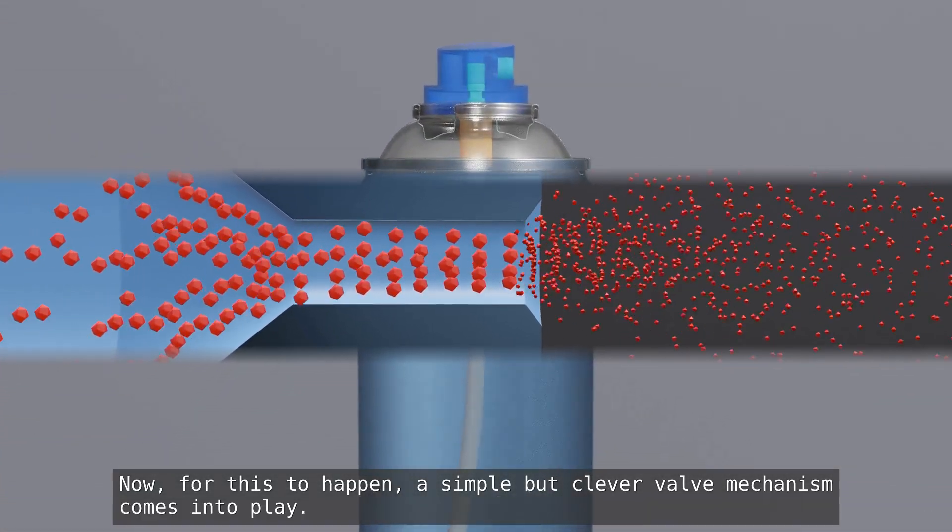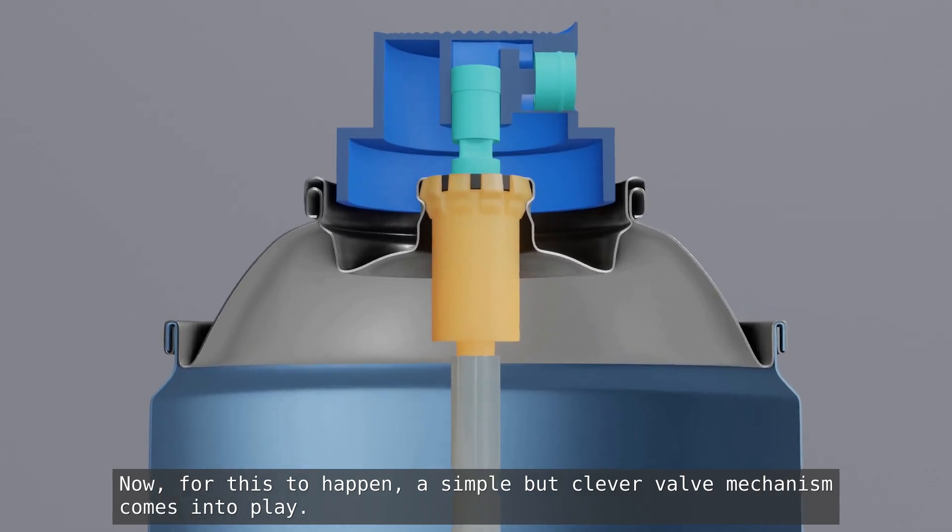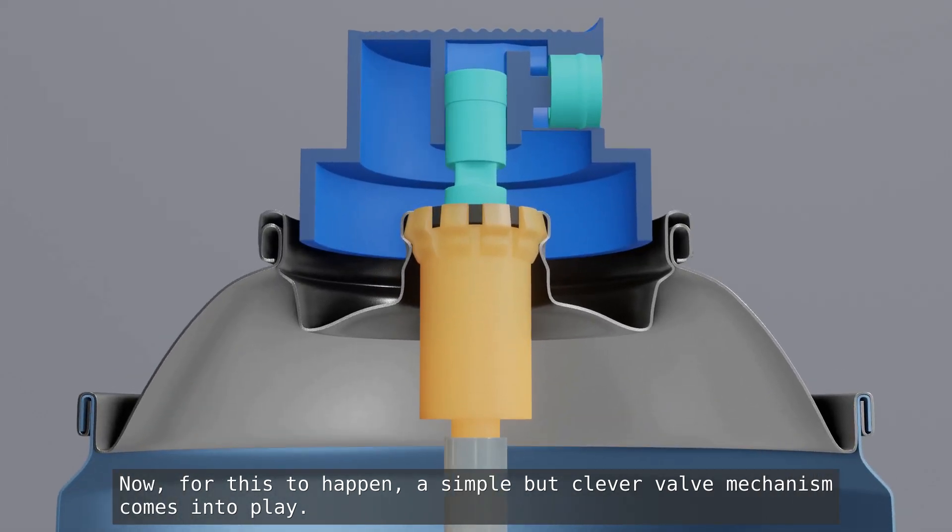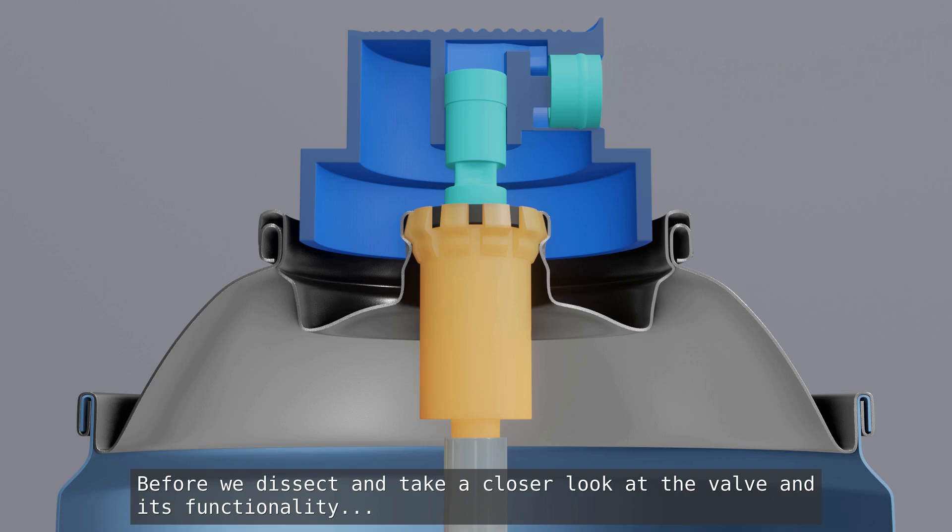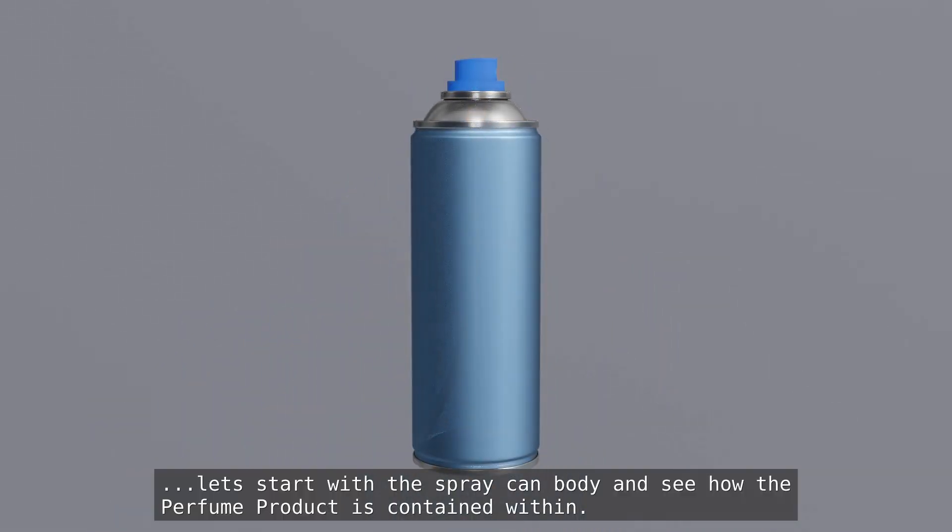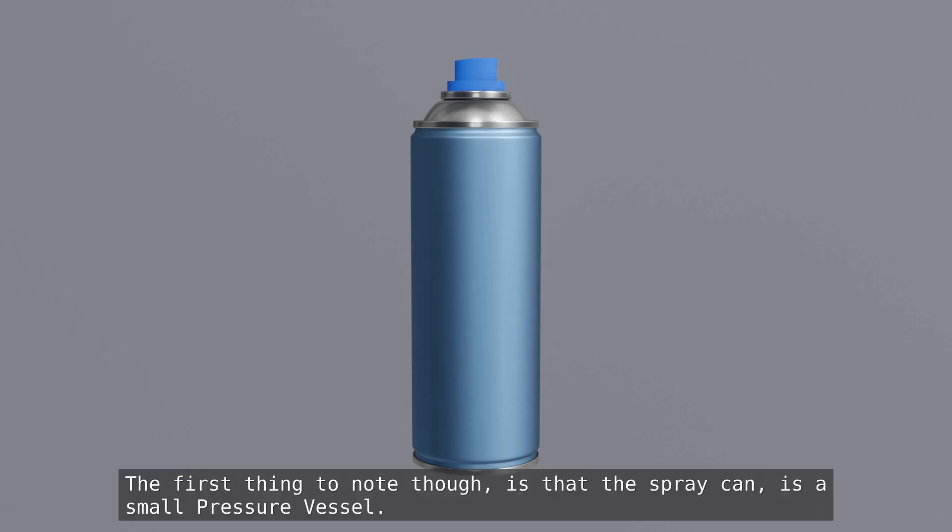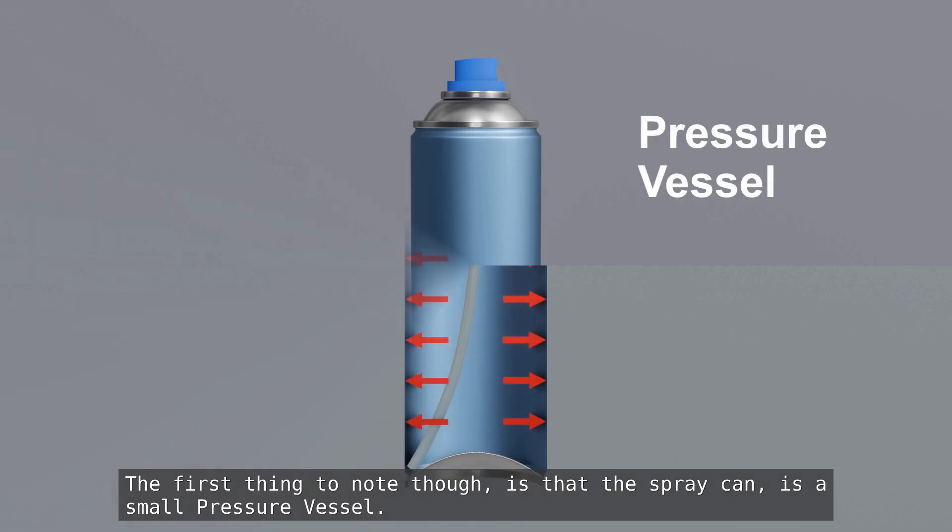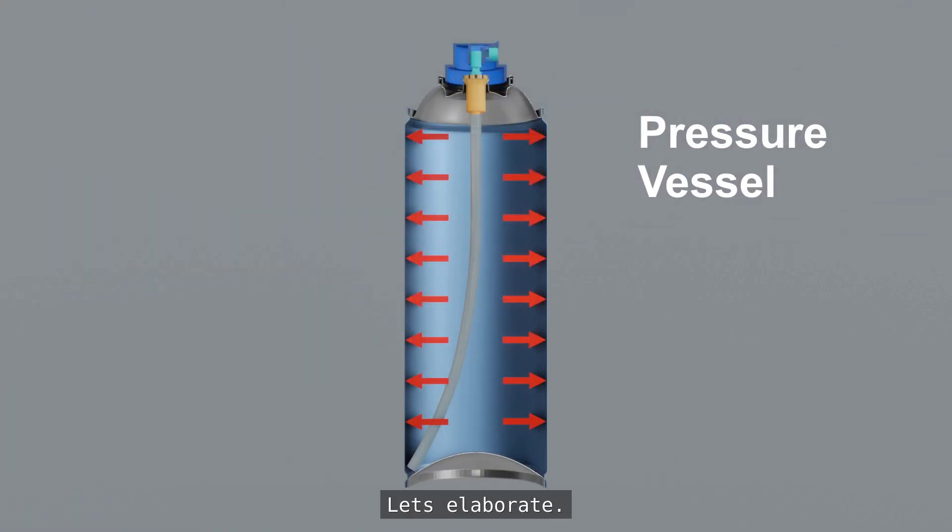Now, for this to happen, a simple but clever valve mechanism comes into play. Before we dissect and take a closer look at the valve and its functionality, let's start with the spray can body and see how the perfume product is contained within. The first thing to note though is that the spray can is a small pressure vessel.